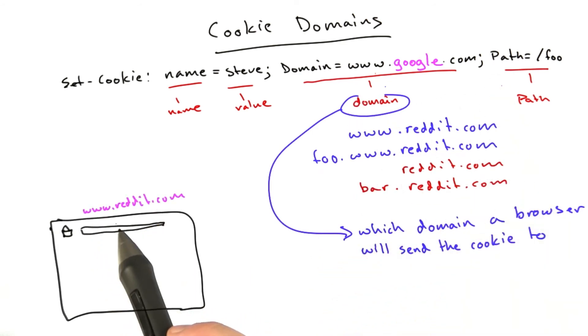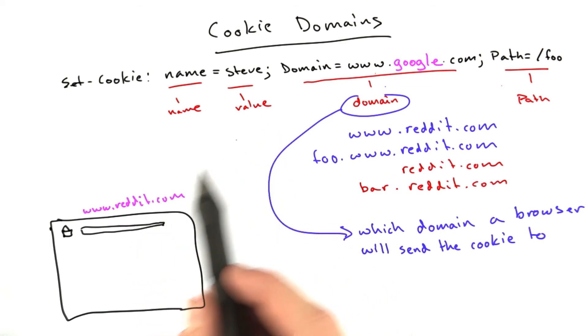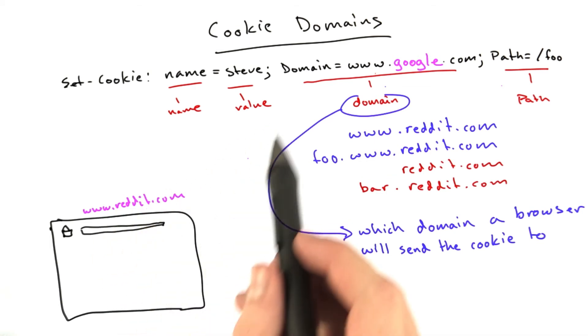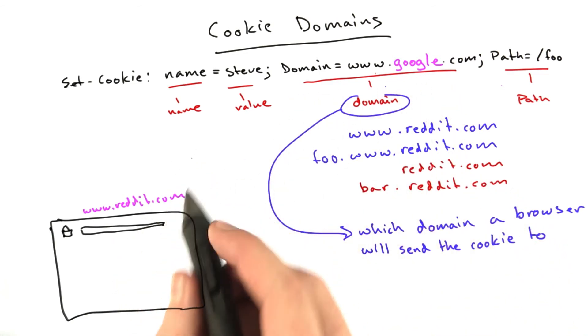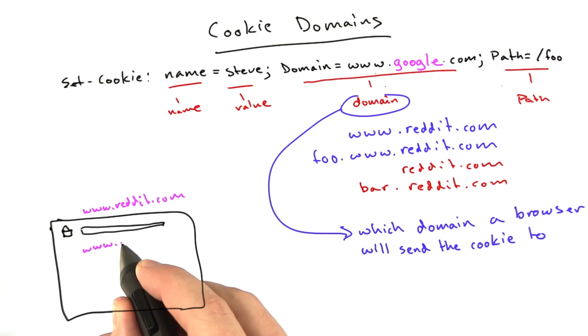So if we're at www.reddit.com, the browser will only accept cookies for, by default, www.reddit.com, if there's no domain parameter. If there's a domain parameter, the only valid domains are www.reddit.com or reddit.com.